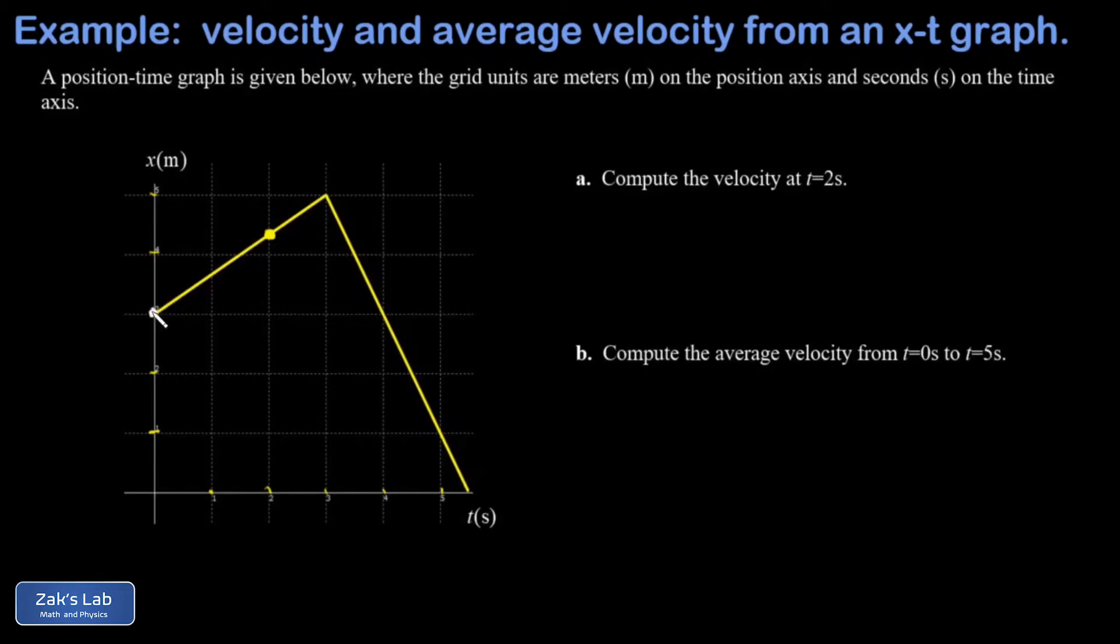The best approach to this is to look for integer grid points, and then I simply compute rise over run. And the rise on that time interval, in other words, the change in position, is a plus two meters, plus two grid spaces, and the run is a plus three seconds.